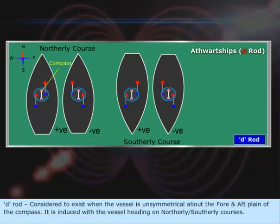D-Rod: Considered to exist when the vessel is unsymmetrical about the fore and aft plane of the compass. It is induced with the vessel heading on northerly-southerly courses.